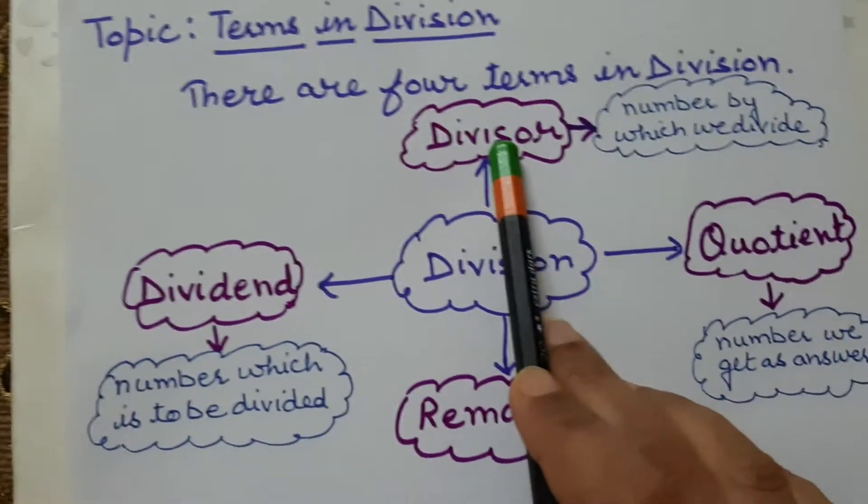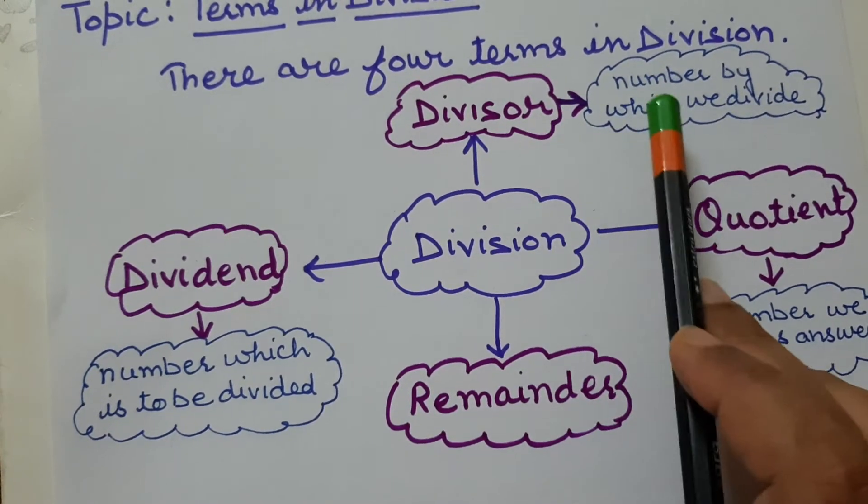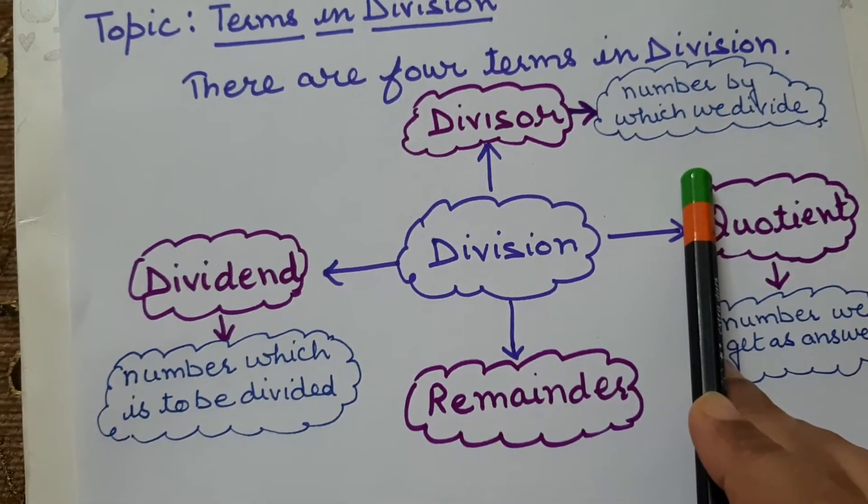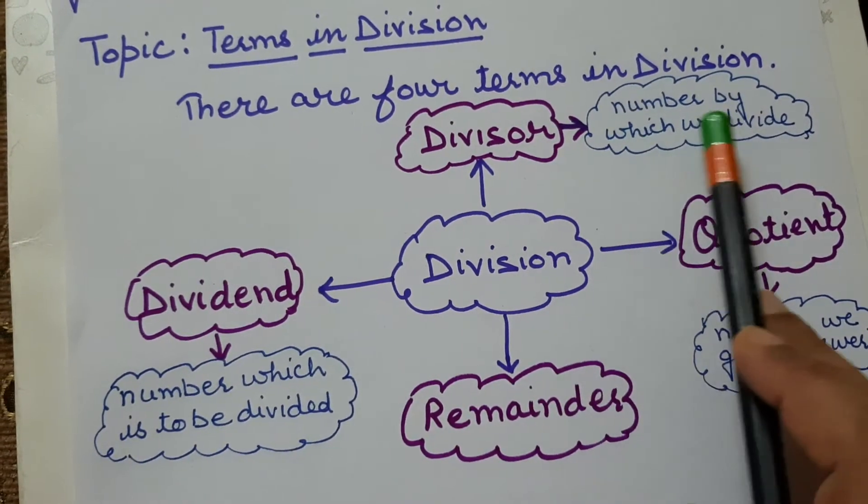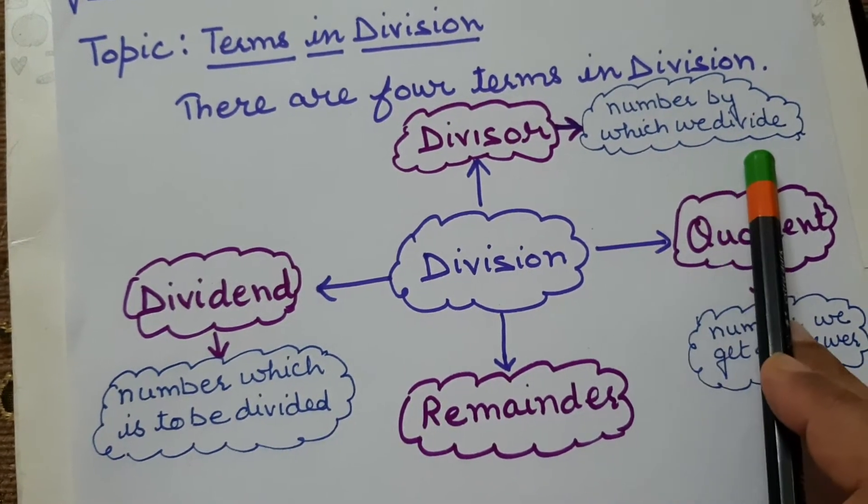What is divisor? Divisor is the number by which we divide. Divisor is the number by which we divide.